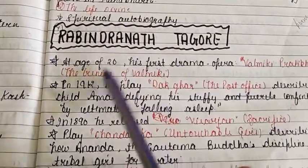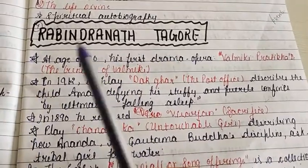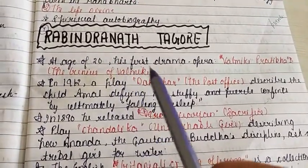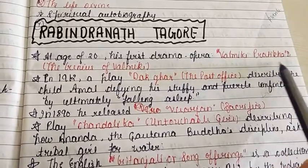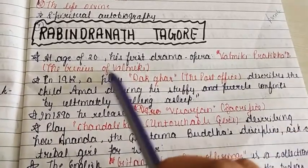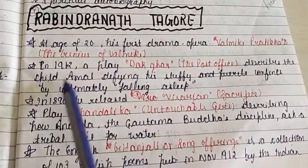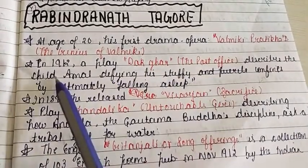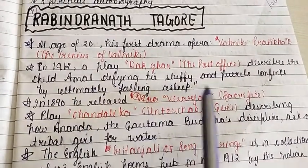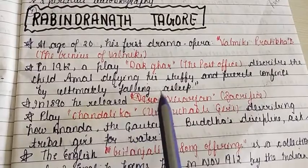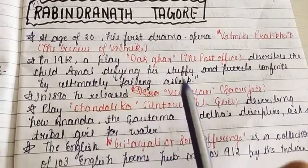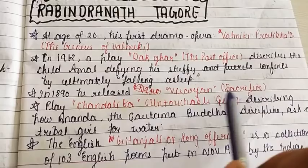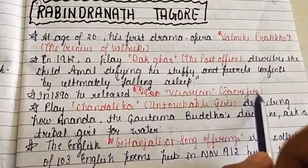Next: Rabindranath Tagore. At the age of 20, Tagore wrote his first drama opera 'Valmiki Pratibha: The Genius of Valmiki.' In 1912, a play 'Dakghar' (The Post Office) described a child named Amal defying his tough confinement by ultimately falling asleep. In 1890, he released 'Visarjan' (Sacrifice), a play.